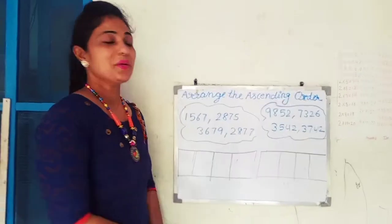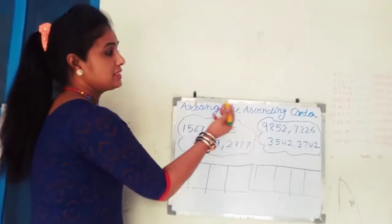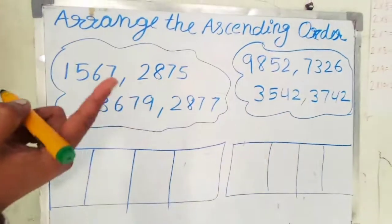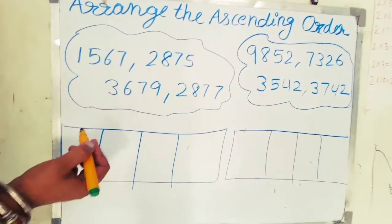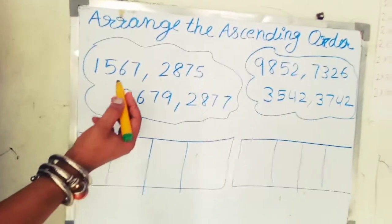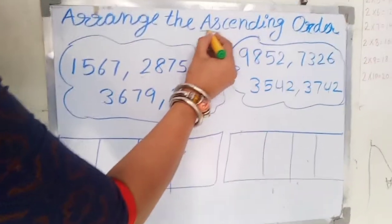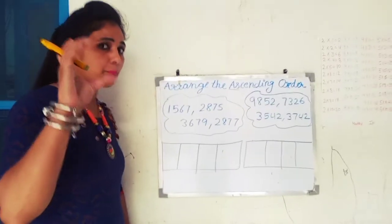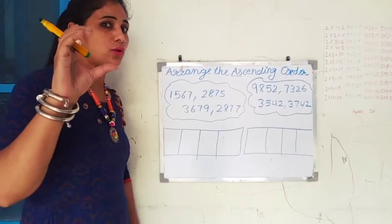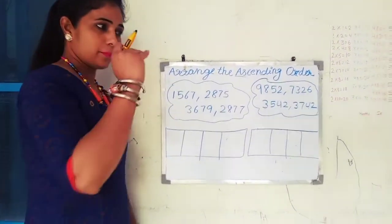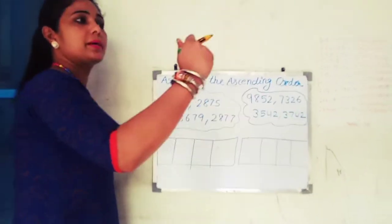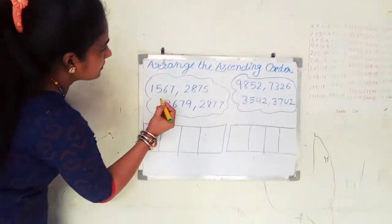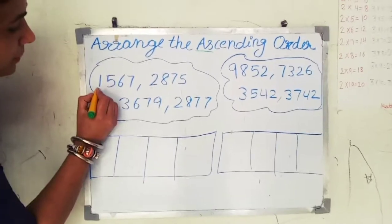Hello children, today our topic is arranging numbers in ascending order. You can see some four-digit numbers here. First of all, we know ascending order — the first alphabet is A, A for apple. Apple size is small, so ascending order means first small, then bigger, bigger, bigger, and the last is the biggest number.